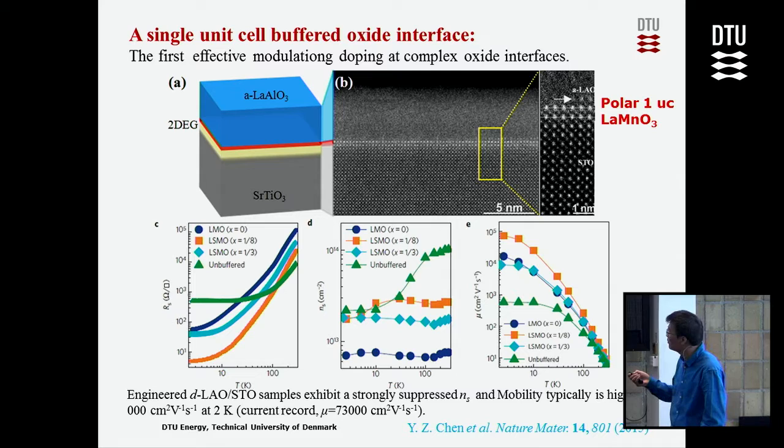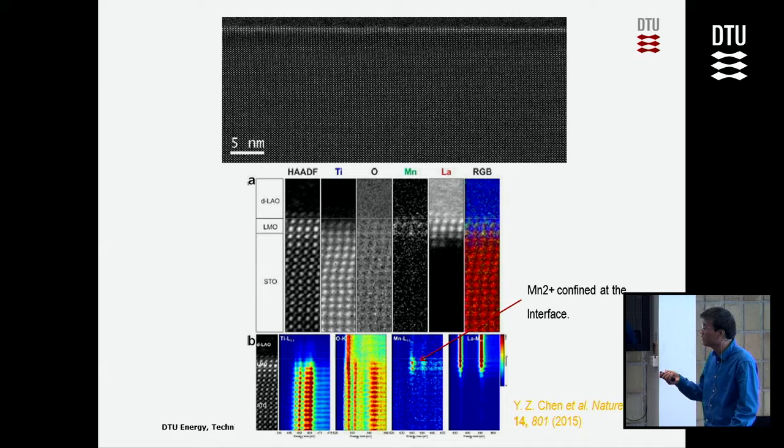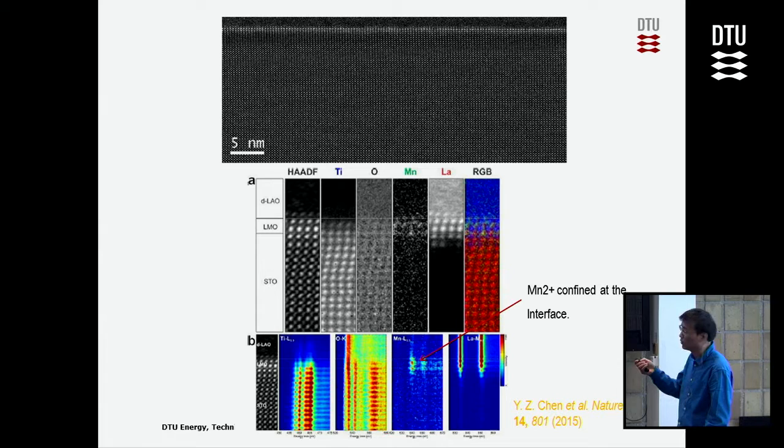We used a lot of advanced techniques to verify our thinking is correct. When you put this layer in, the interface becomes very clean, and you can also see the spacer layer is only confined at the interface. The quality is quite good. We also used a beamline to determine where the electrons go.